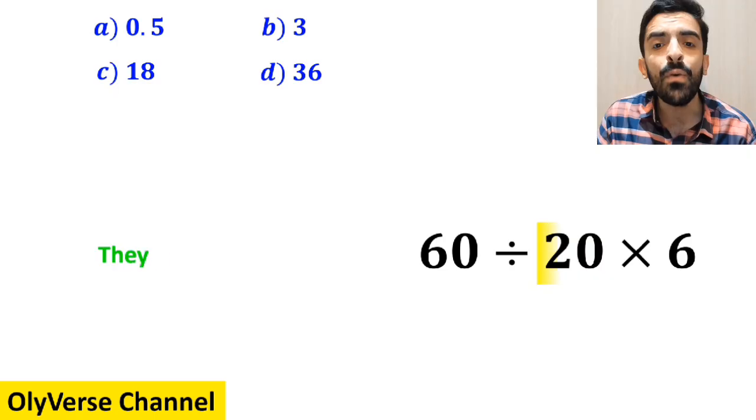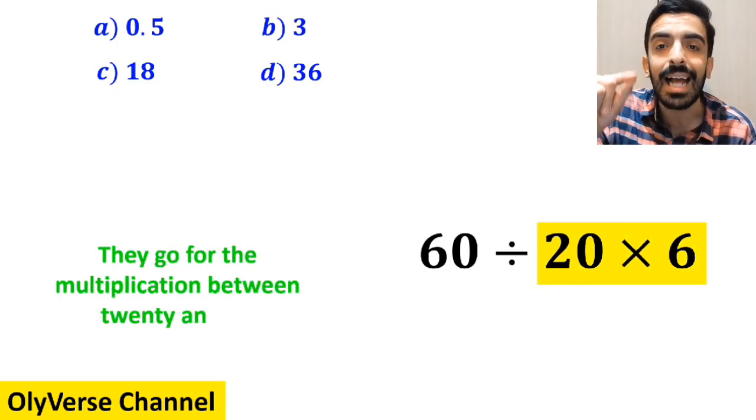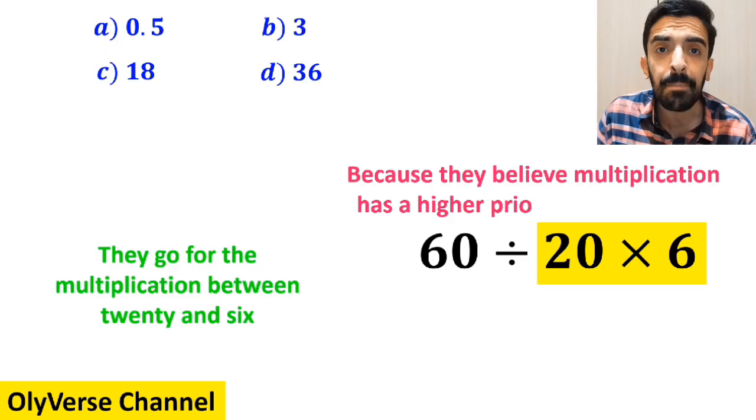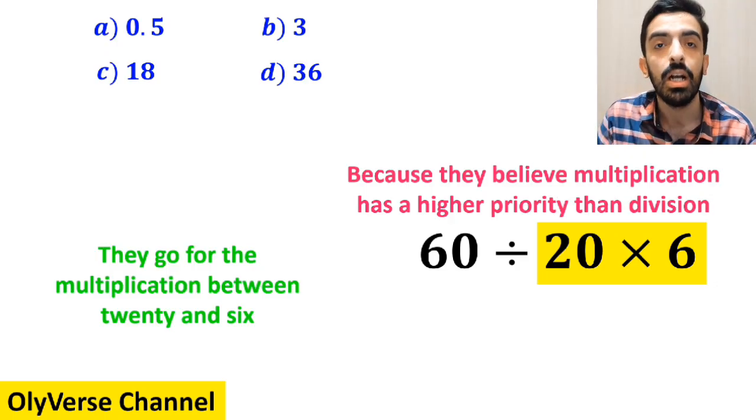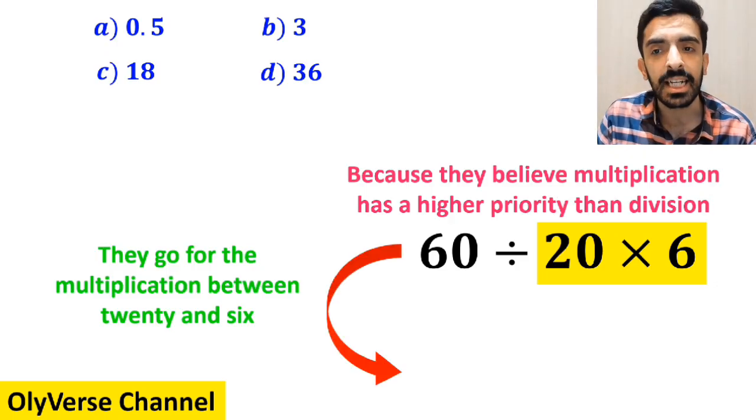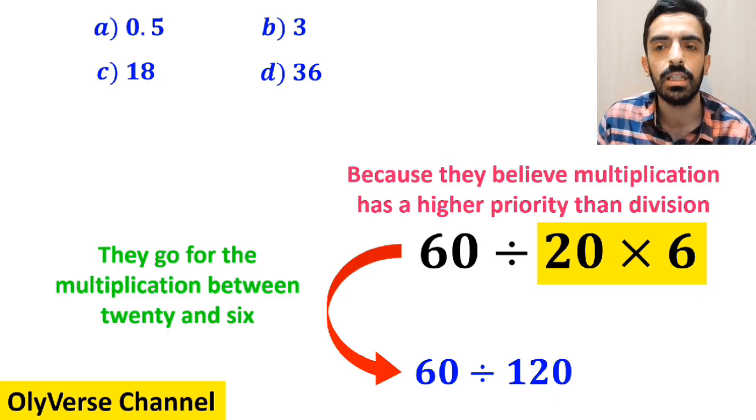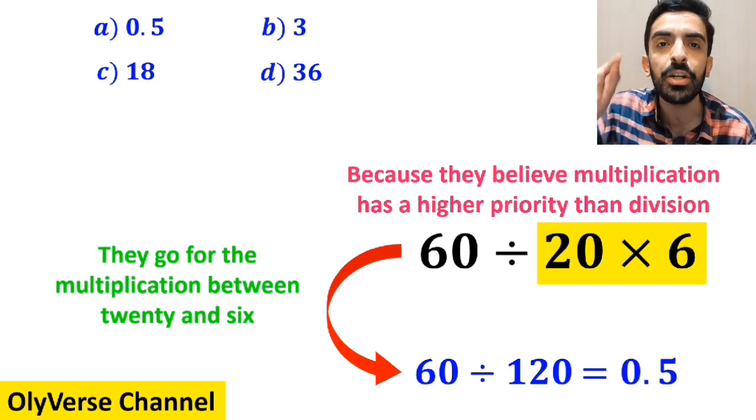In the next step, they go for the multiplication between 20 and 6 because they believe multiplication has a higher priority than division. So they simplify this expression and write it as 60 divided by 120, which finally gives them the answer 0.5.